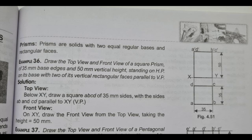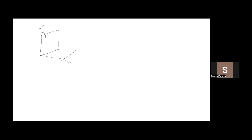Next sum: draw the top view and front view of a square prism of 35mm base edges and 50mm vertical height, standing on HP on its base, with two of its vertical rectangular faces parallel to VP. We'll draw the horizontal plane and vertical plane. A square prism is square at the top and bottom, joined by four rectangular surfaces, standing on its base like this.